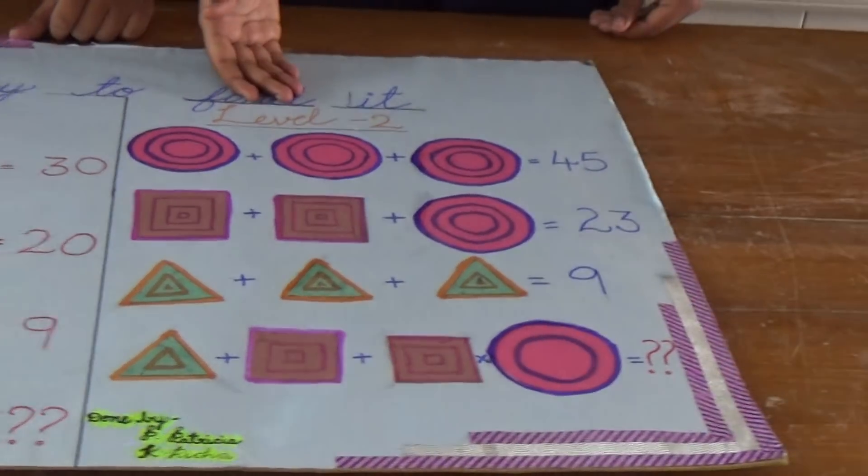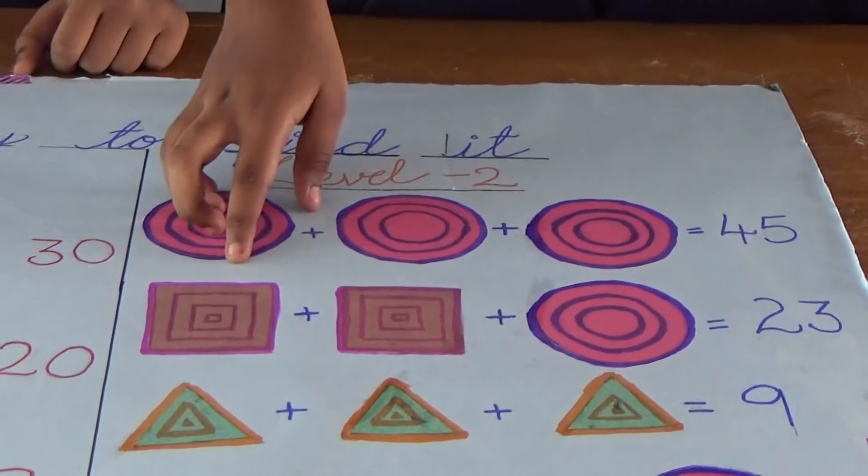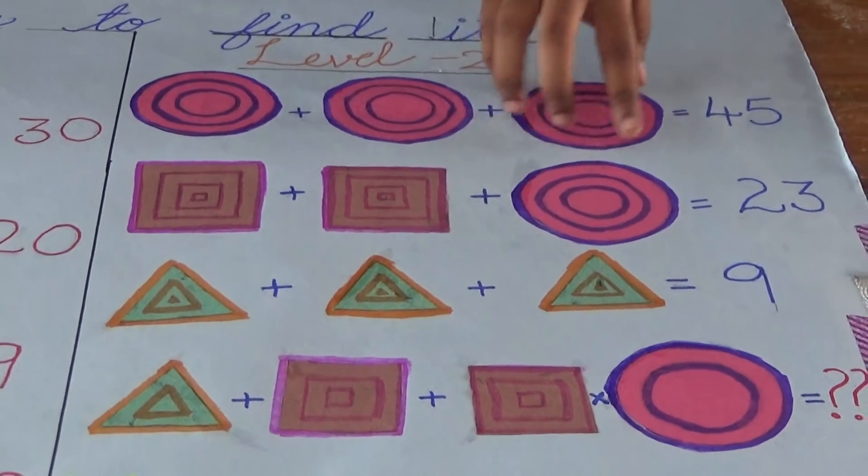This is Level 2. The addition of these 3 circles equals 45. The addition of 2 squares and 1 circle equals 23.